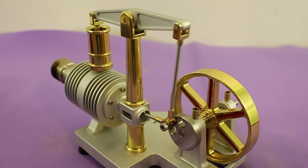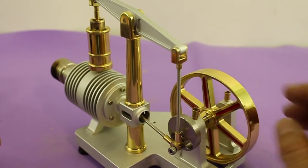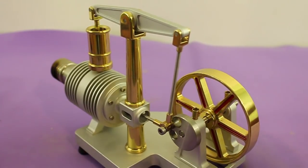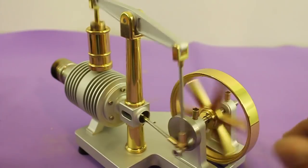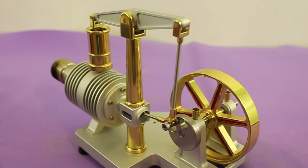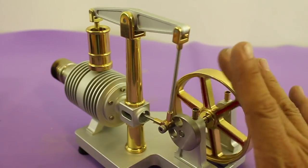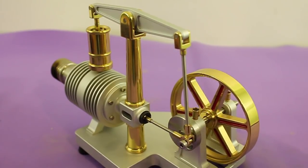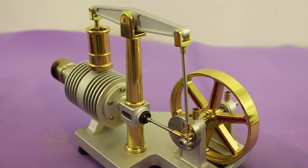The Stirling engine was originally designed to replace the prevailing steam engine and for some time they were used mostly to pump water but eventually they became obsolete.